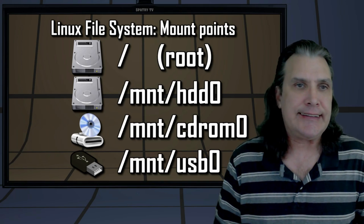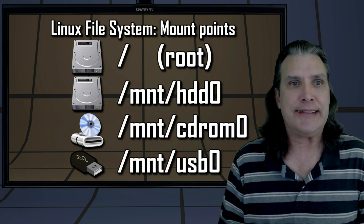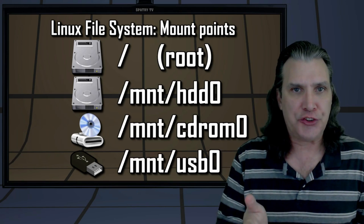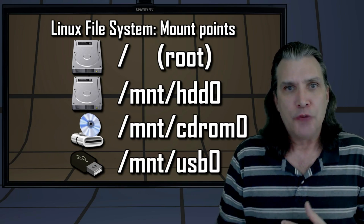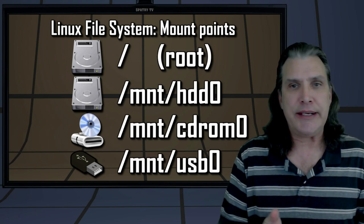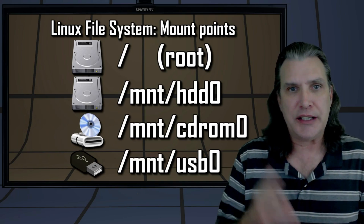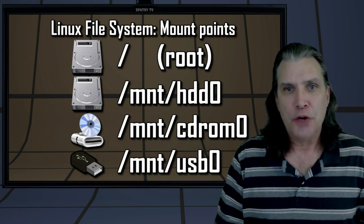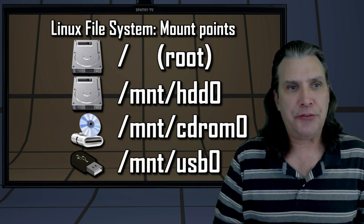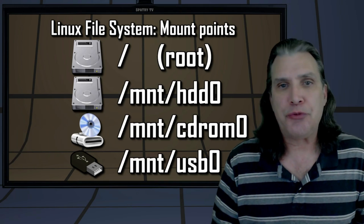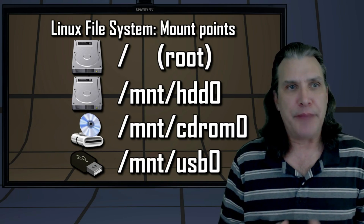In most Linux distributions, USB keys and CDs are automatically mounted when they are inserted or attached. The default mount directory is a subdirectory of /media or /mnt. For example, your first CD-ROM drive might be mounted at /media/cdrom0, while the contents of a USB key might be accessible through /media/usb0. For drives you permanently install in your system, the /etc/fstab file can be used to define mount points so that your hardware can be mounted at boot time. You can also mount hard disks and media manually using the shell.